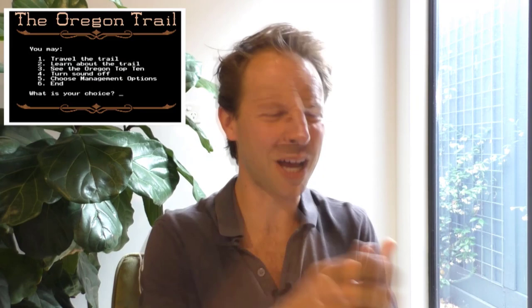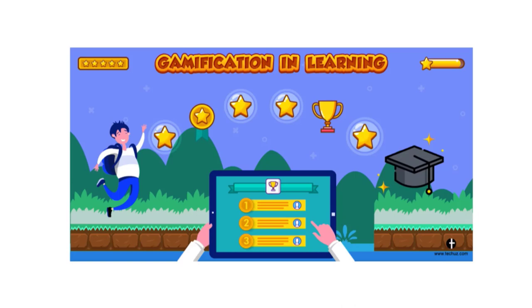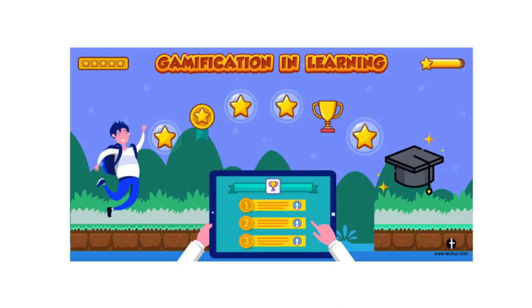I call this the Oregon Trail Effect. I grew up playing that game for hours and could tell you everything about hunting, fording a river, dying of dysentery — but only recently did I learn the game was meant to be a history lesson. I can tell you nothing about the Oregon Trail except maybe that it ended in Oregon. Why? Because memory is the residue of thought. When we adapt learning to suit the primary purpose of a computer, we run the risk of focusing attention on the wrong aspects of learning. So even though engagement might go up, if we're not careful this will have no or even negative impact on the ultimate learning we hope to do.